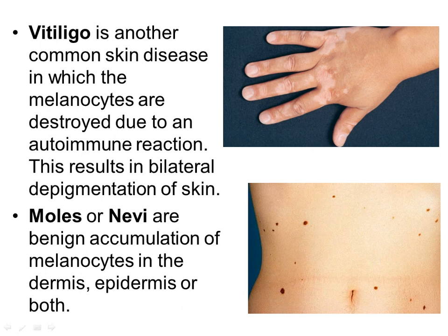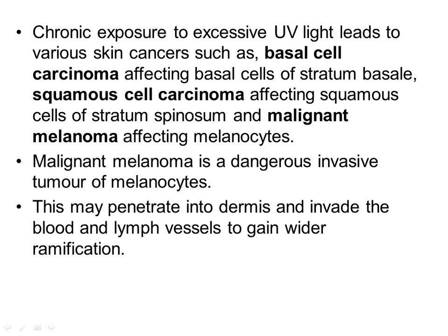Vitiligo is another common skin disease in which melanocytes are destroyed due to an autoimmune reaction, resulting in bilateral depigmentation of the skin visible as white patches. Moles (nevi) are benign accumulations of melanocytes in the dermis, epidermis, or both. Chronic exposure to excessive ultraviolet light leads to various skin cancers: basal cell carcinoma affecting basal cells of the stratum basale, squamous cell carcinoma affecting squamous cells of the stratum spinosum, and malignant melanoma affecting melanocytes. Malignant melanoma is a dangerous invasive tumor that may penetrate into the dermis and invade blood or lymph vessels, gaining wider dissemination.